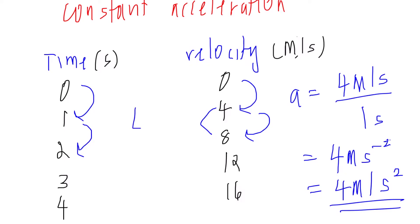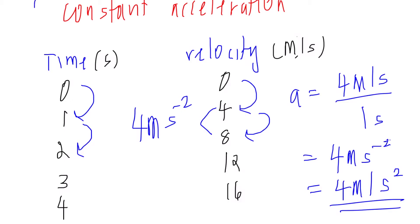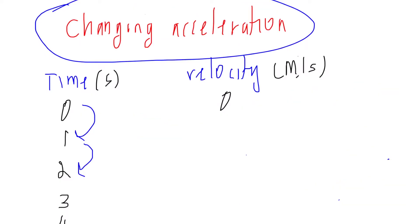This means that every one second, the velocity increases by four meters per second. The acceleration is four meters per second squared. The rate at which the velocity changes is four meters per second squared — it is constant and does not change.